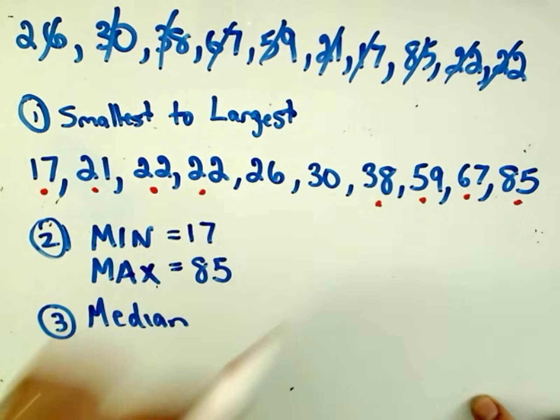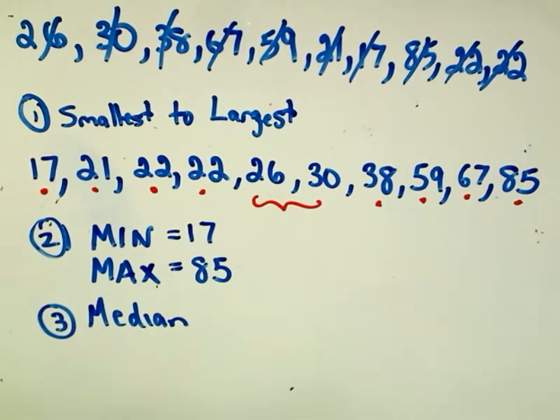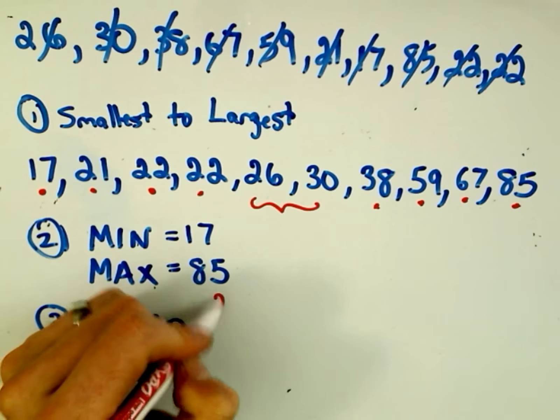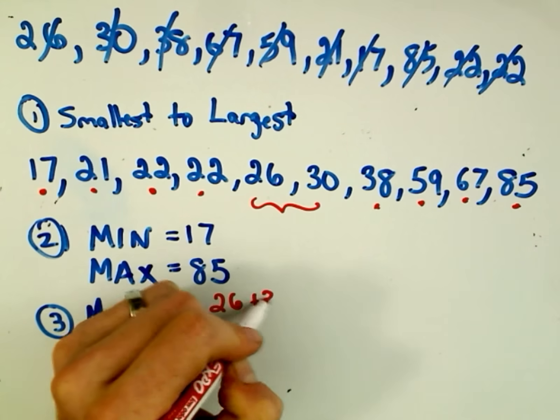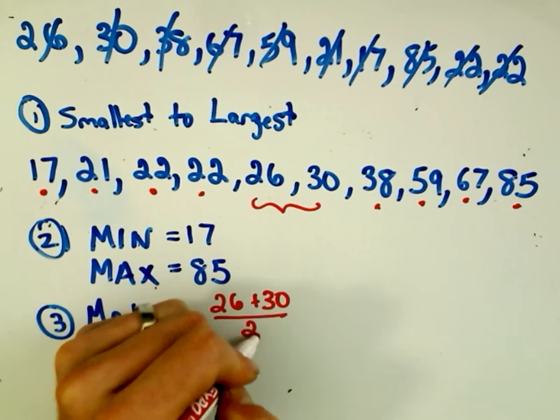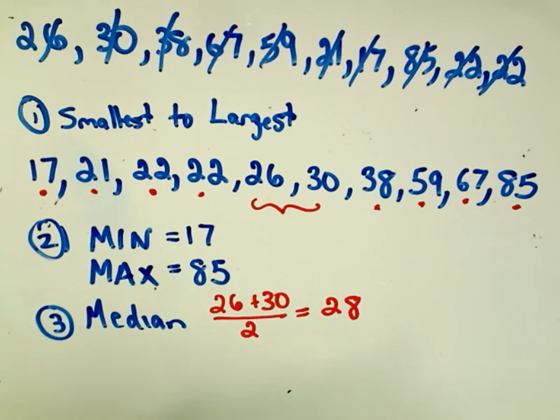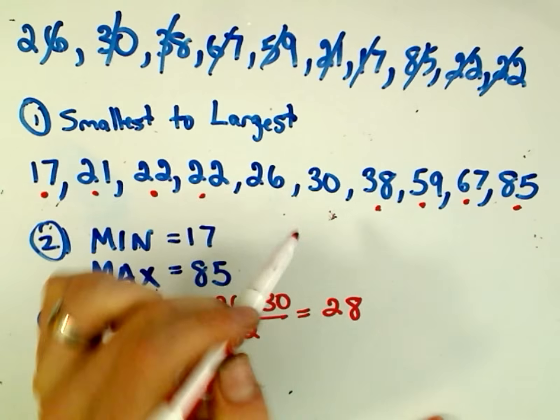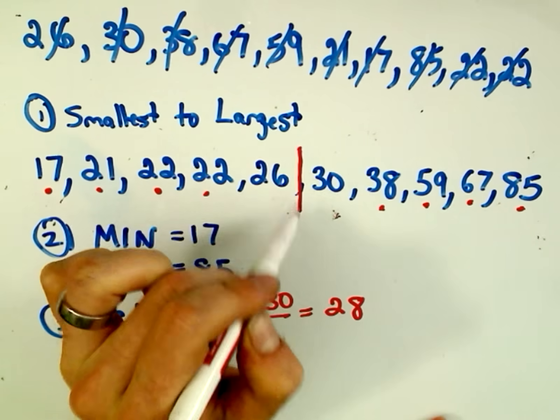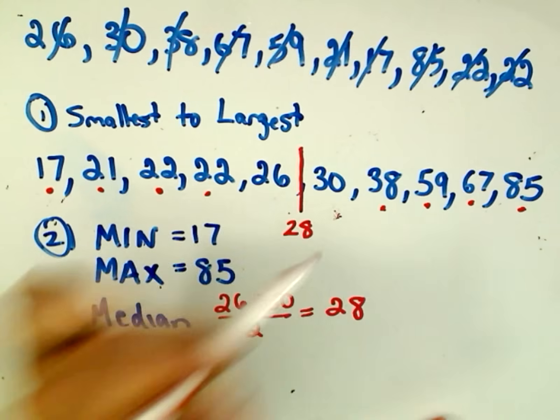Okay, that goes with that, and notice we have two numbers left over in the middle. Okay, so that's going to be our median. In this case we have to average them. So 26 plus 30 divided by 2, so that's just the average, which will give us 28. Okay, and now we look at all the numbers that are smaller than 28.